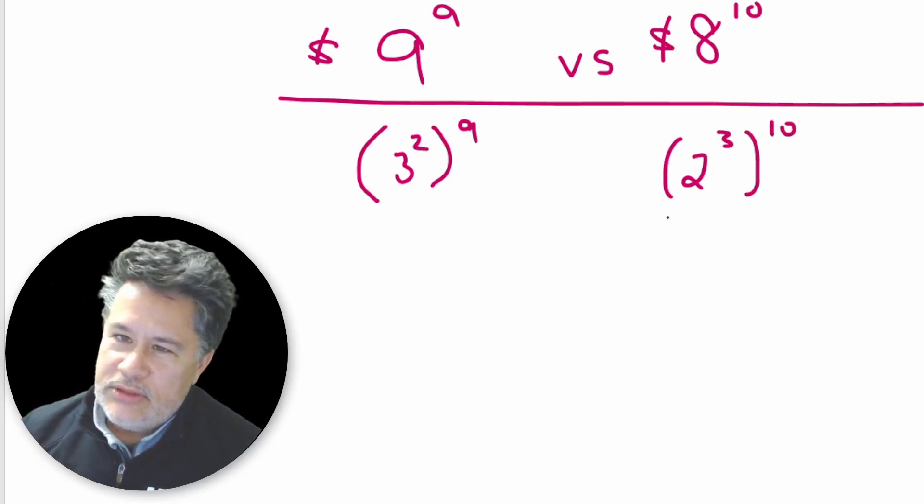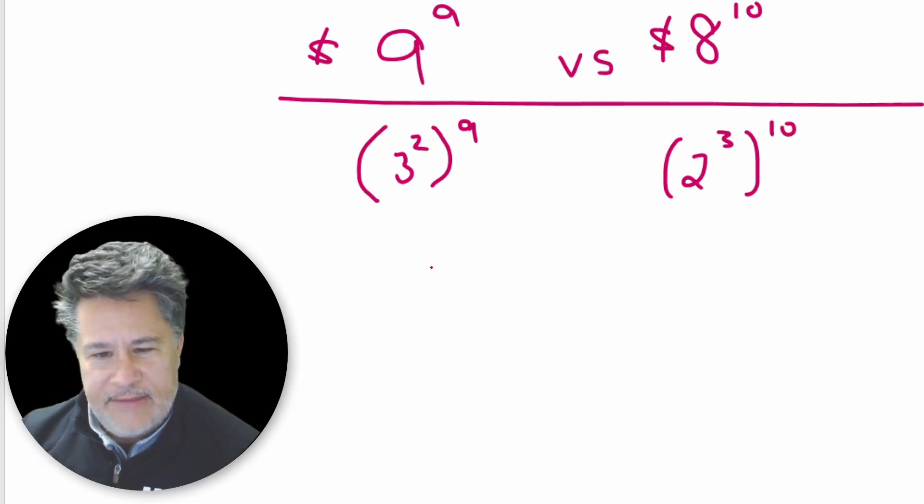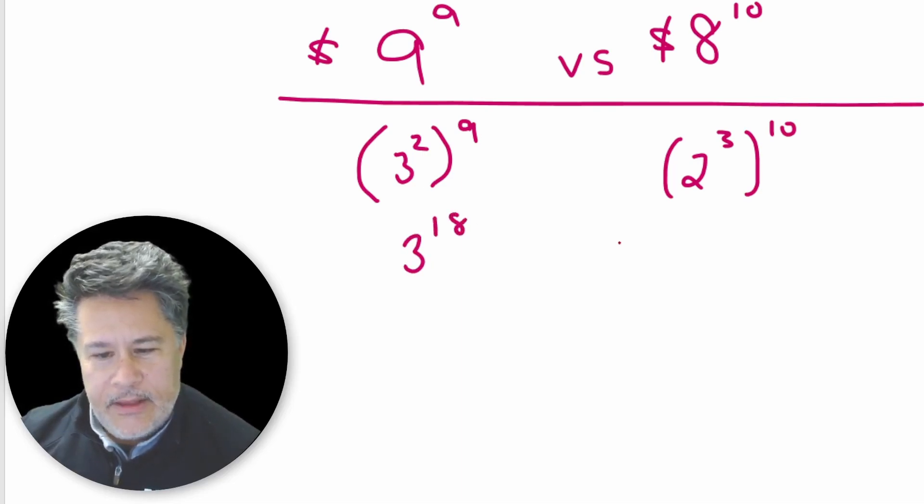And now you guys know that with your rules of exponents, a power to a power means that we have to multiply them. So we're going to get three to the eighteenth versus two to the thirtieth.